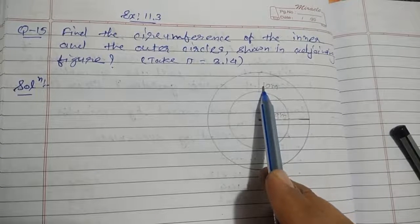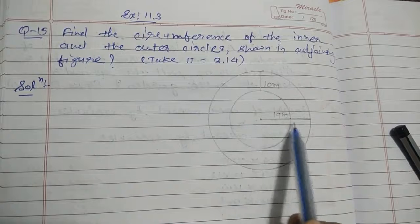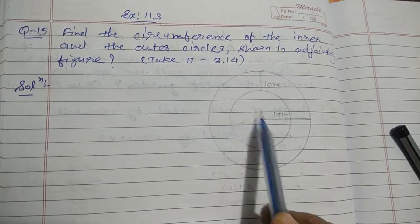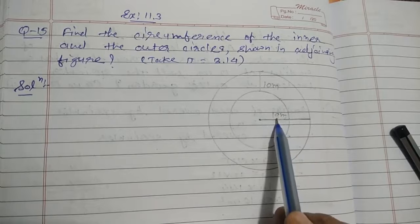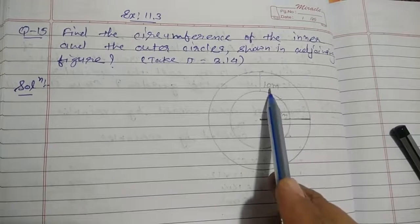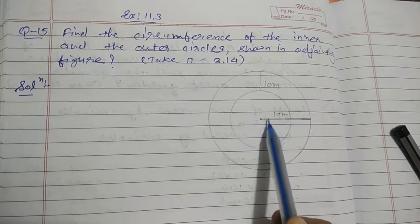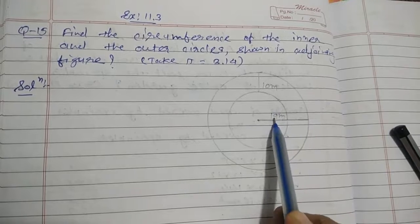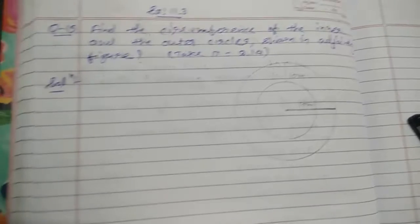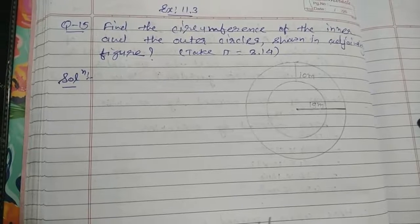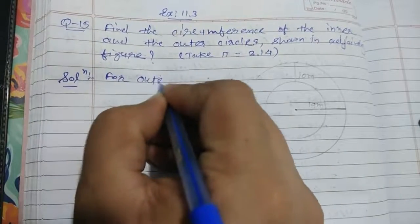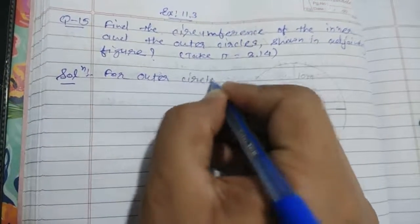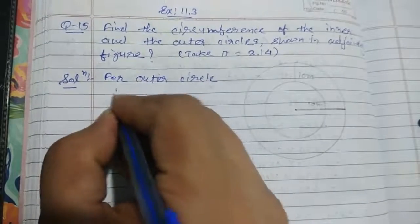To find the radius of the inner circle, we subtract 10 meters from the radius of the outer circle: 19 minus 10 equals 9 meters. Now, first we will find the circumference for the outer circle. The radius of the outer circle is 19 meters.